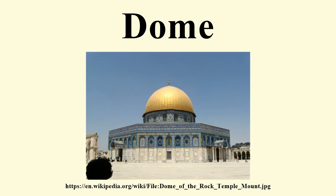Cupola has also been used to describe the inner side of a dome. Drums, also called tholobates, are cylindrical or polygonal walls with or without windows that support a dome. A tambour or lantern is the equivalent structure over a dome's oculus, supporting a cupola.